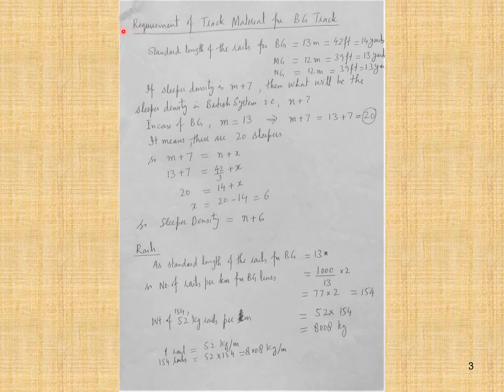Now look at this slide. For broad gauge, the standard length of the rails is 30 meters, 42 feet, or 14 yards. For meter gauge, it is 12 meters, 39 feet, or 13 yards.